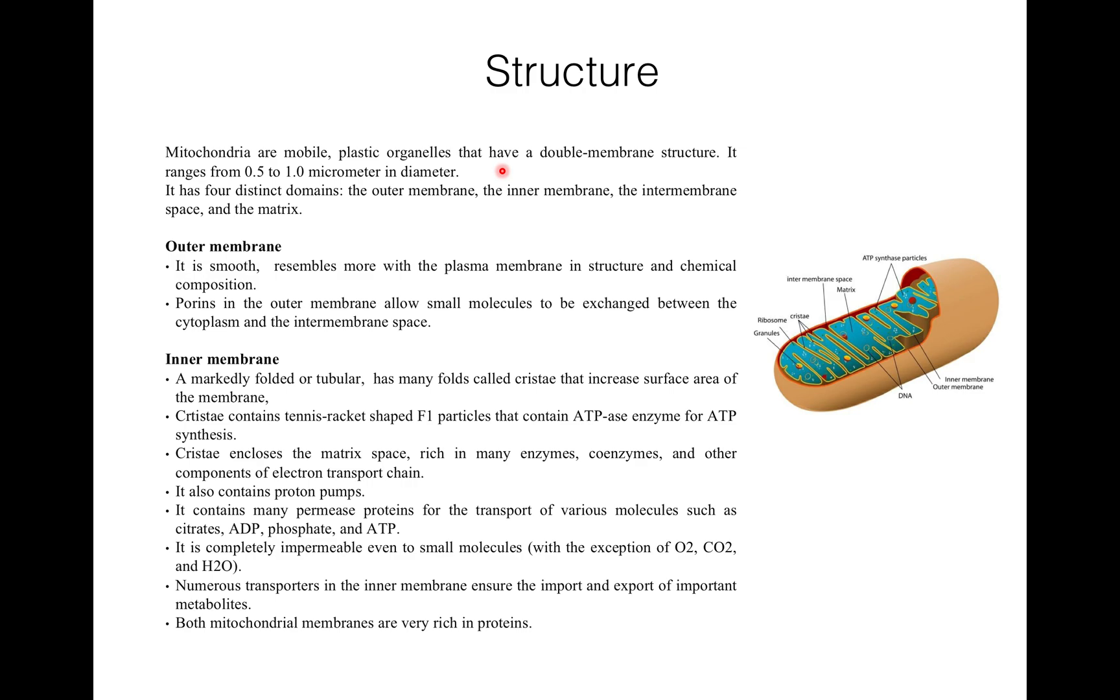They are however absent from mature mammalian RBCs. Now structure: mitochondria are mobile, plastic organelles that have a double membrane structure and it ranges from 0.5 mm to 1 mm in diameter.